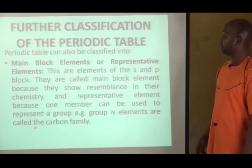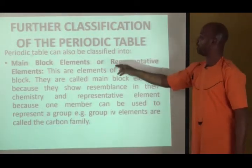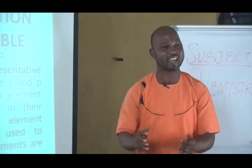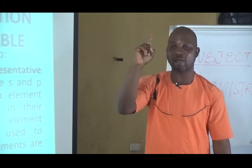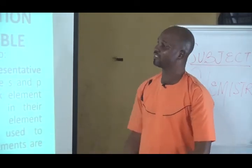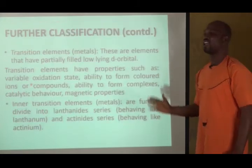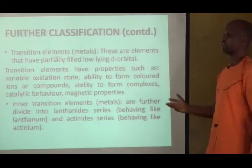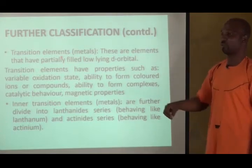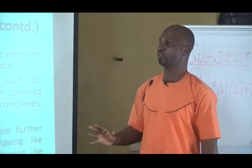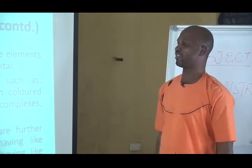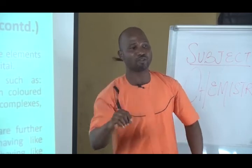Further clarification: the S and P-block elements are called main block elements or representative elements because they show resemblance in their chemistry, and one element can represent the whole group — for instance, the group 4 elements are called the carbon family. The transition elements are in between the S and P-blocks, also called D-block elements. If asked to define a transition element, say these are elements that have partially filled low-lying D-orbitals.